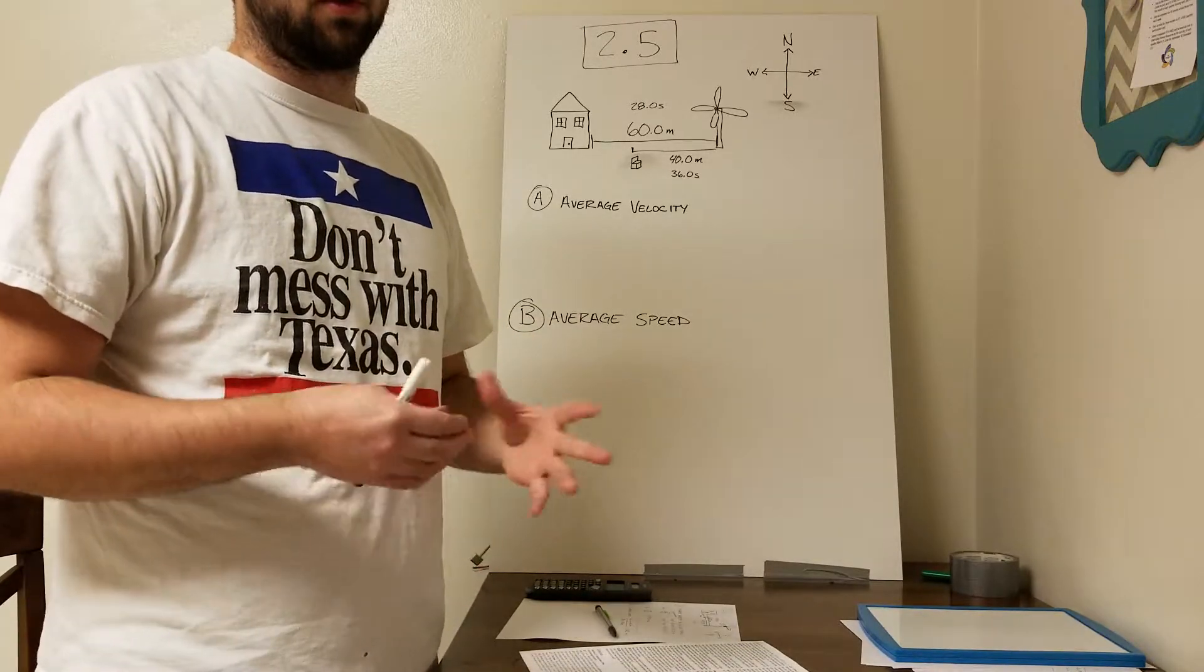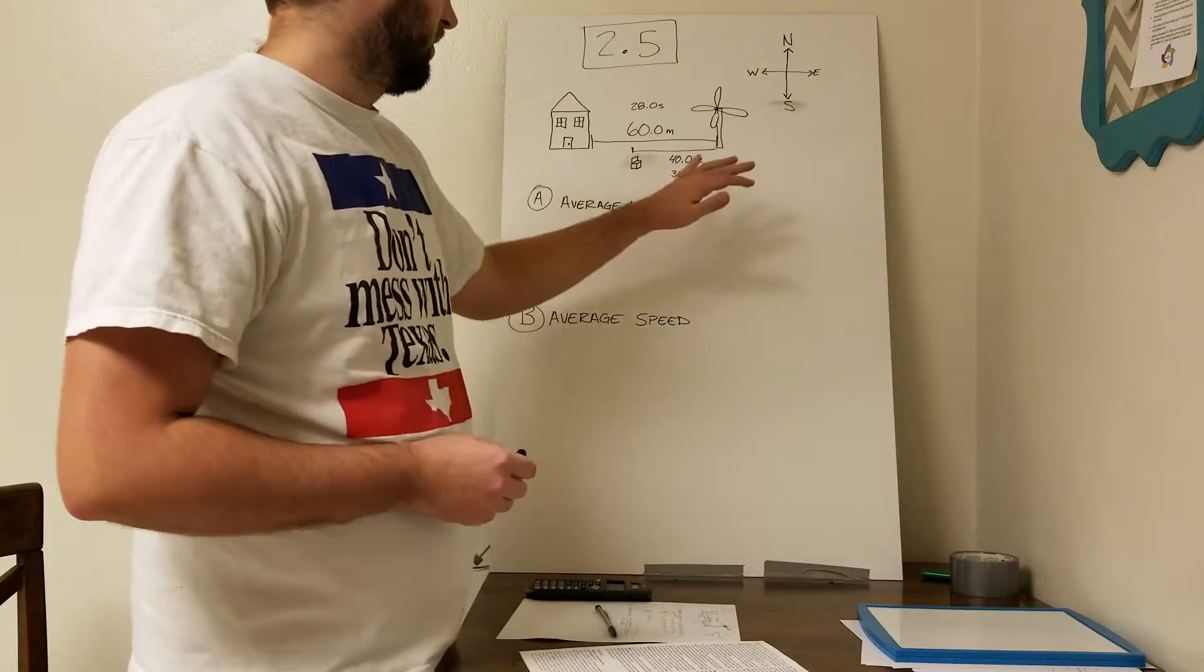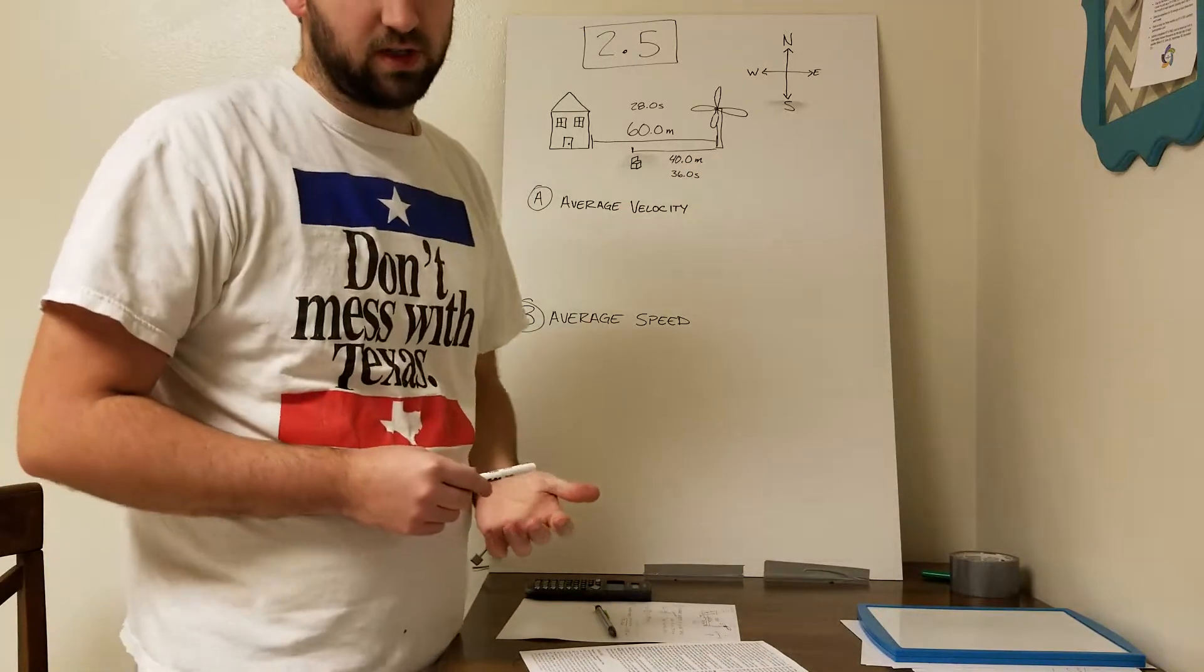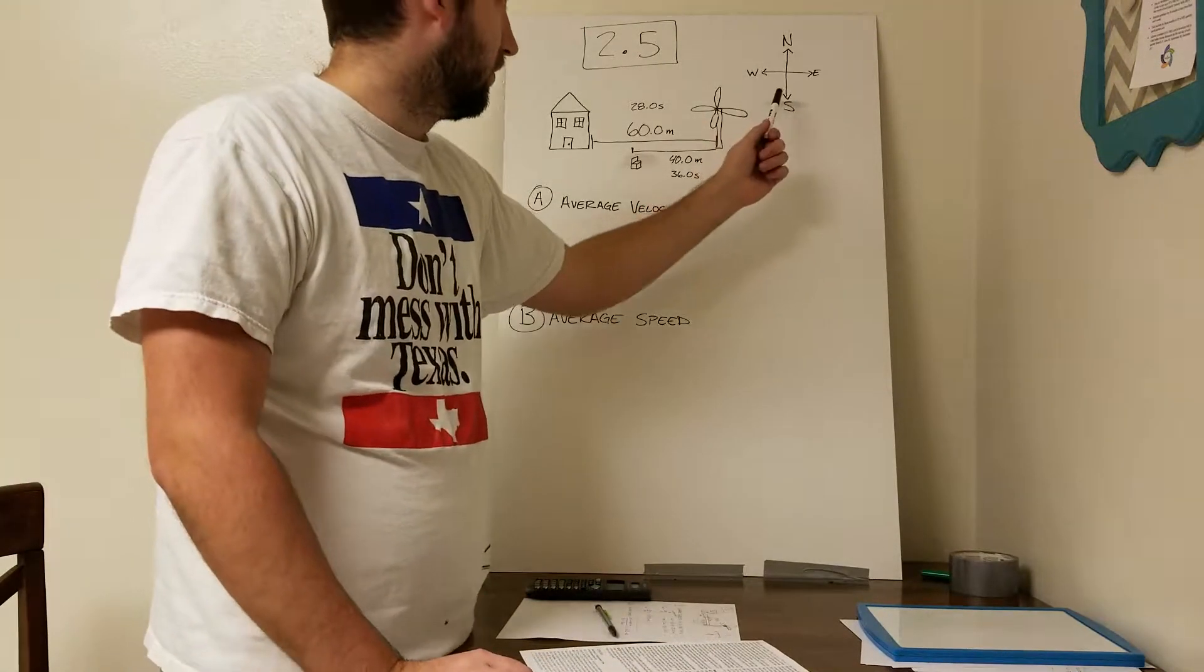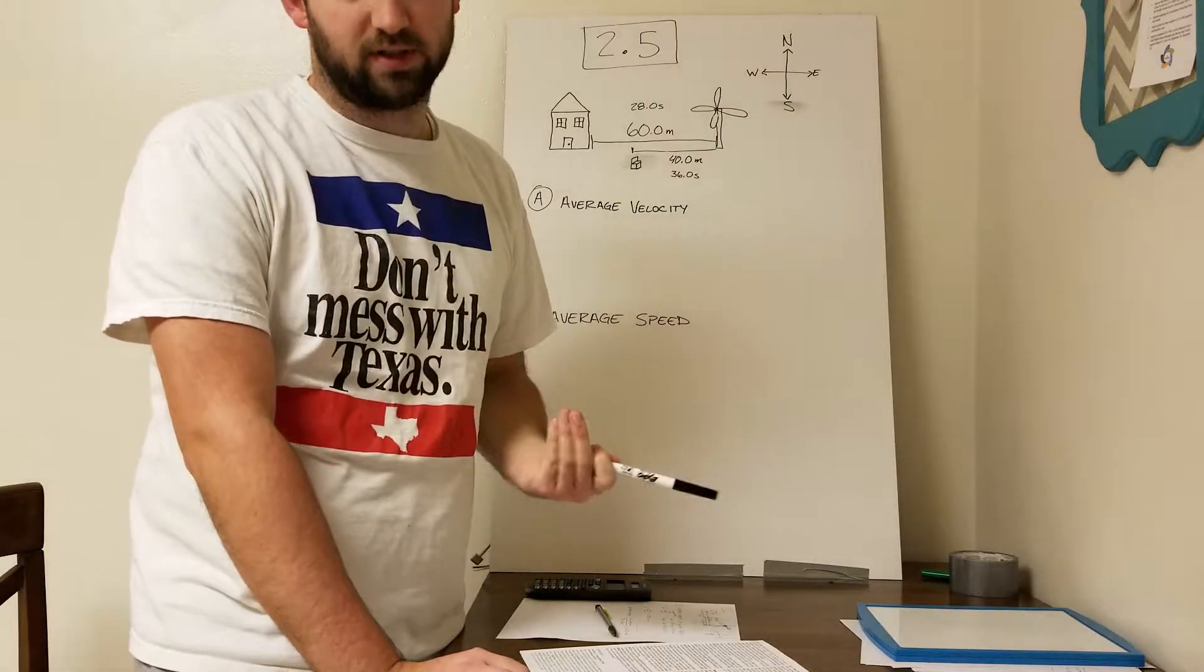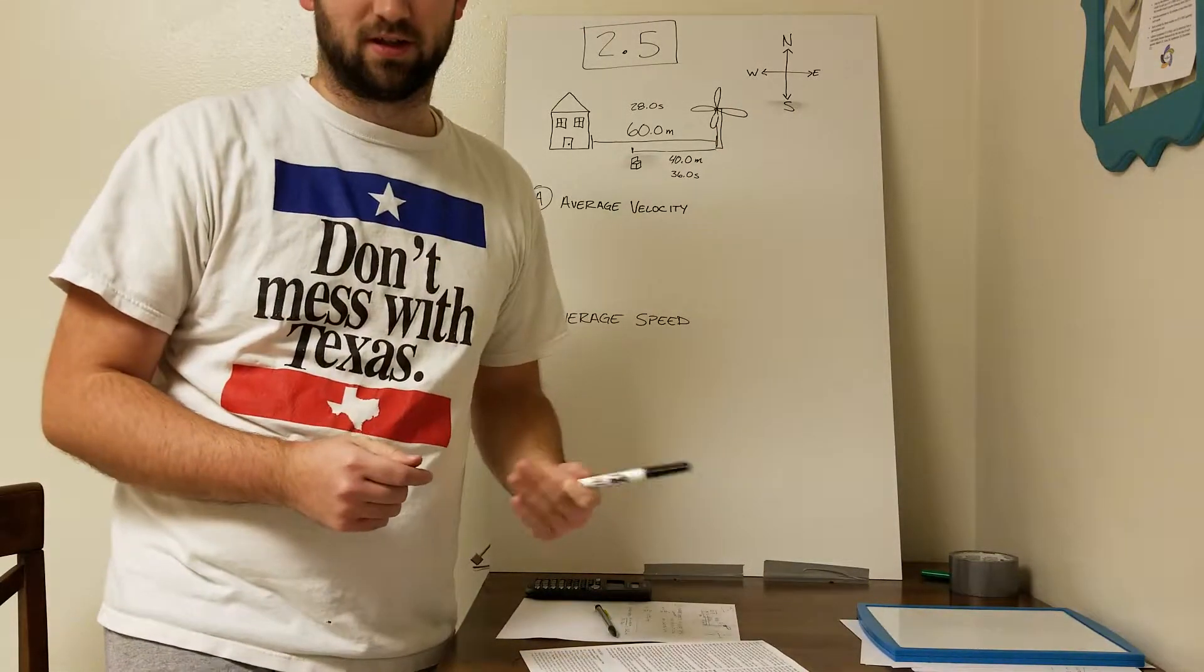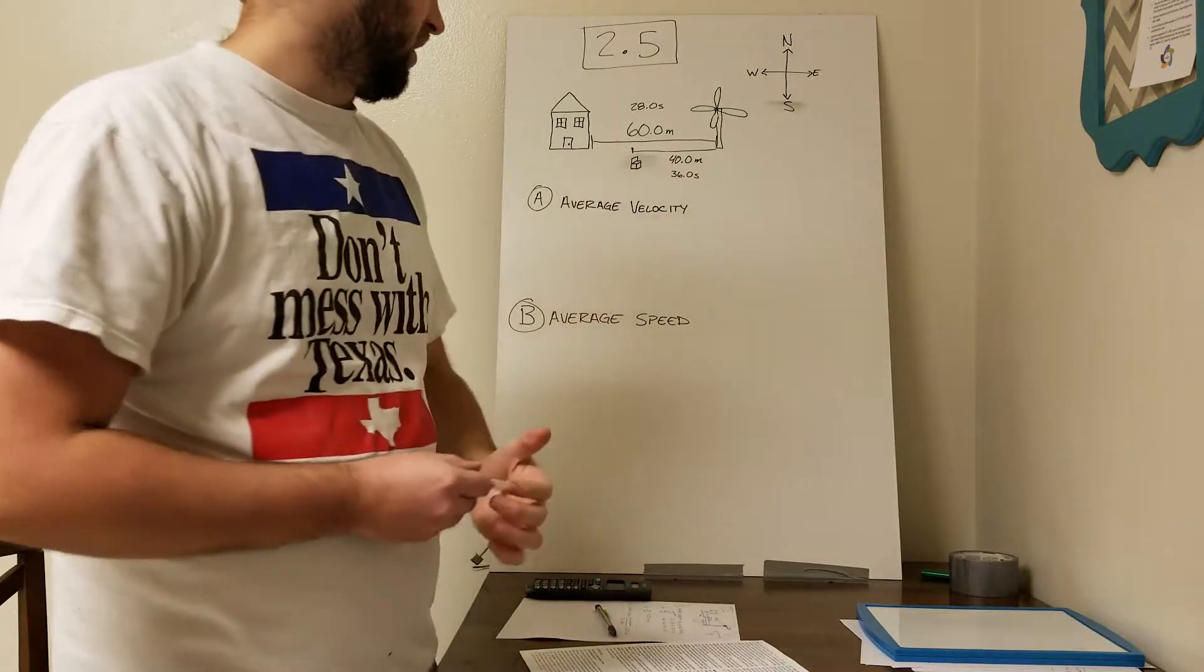First of all, I drew out this little visual just to help myself think through it a little bit, and I also made a north-south-east-west coordinate system just so I kept everything straight in my brain. Let's start with part A, which is the average velocity.